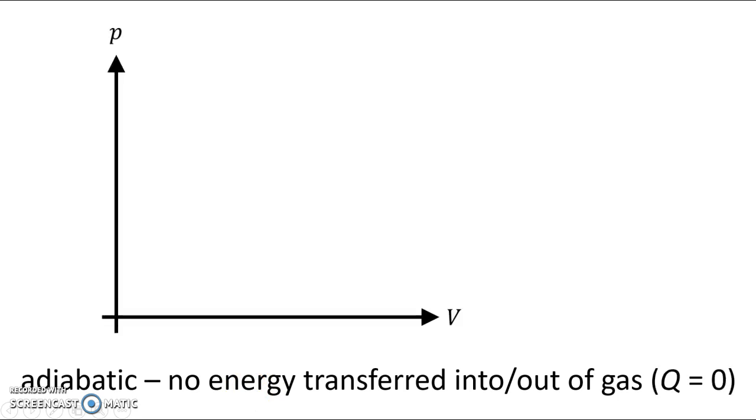What does this look like on a graph? It's almost like an inverse curve, but it's much steeper. How do we make a process like this occur?